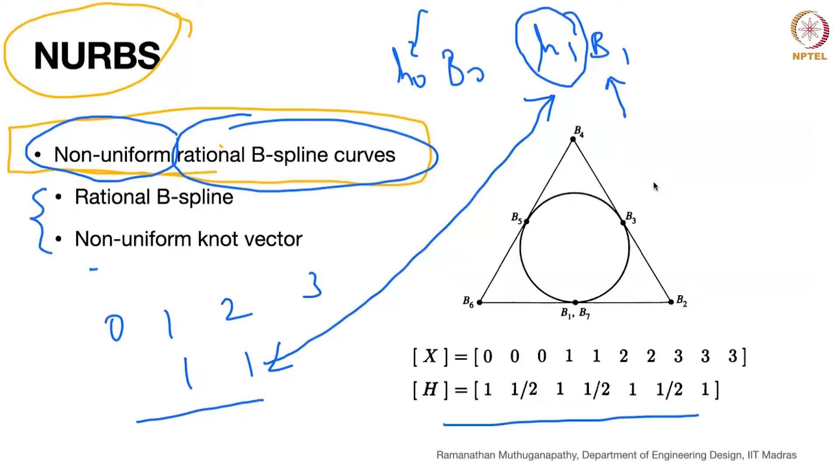What that does is you can actually generate rational curves like your circles and other second degree curves also using B-spline, and it will be an exact circle. It will conform to your exact parametric equation of your circle. This is not possible using, of course, in this case it becomes a rational Bezier curve also, which is maybe a little bit too much for you guys to see.